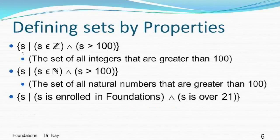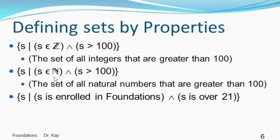We can define sets by properties using set-builder notation. For example: the set of all elements s such that s is an element of the integers and s is greater than 100 — in other words, the set of all integers greater than 100. Similarly, the set of all s such that s is in the natural numbers and s is greater than 100. We could also define the set of all students s such that s is enrolled in foundations and s is over 21.